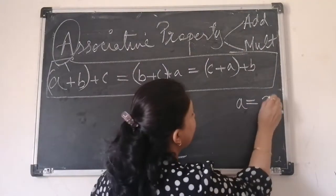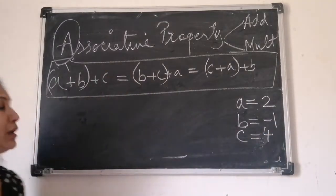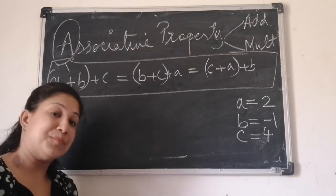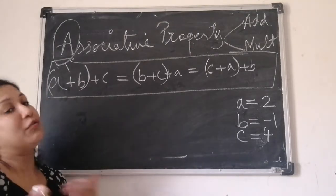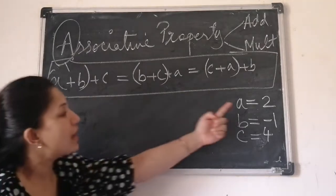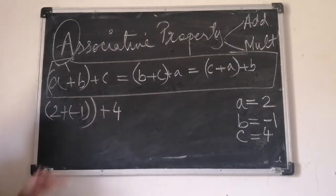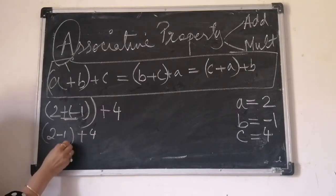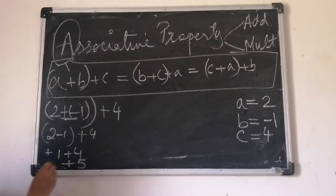Suppose the value of A is 2, B is minus 1, and C is 4. Let us put the values and find out. The property states that you take any more than two numbers, add in any order, the answer remains the same — but we need to verify it. Value of A is 2, value of B is minus 1, value of C is 4. So: (2 + (−1)) + 4 — difference in sign, subtract — gives plus 5.